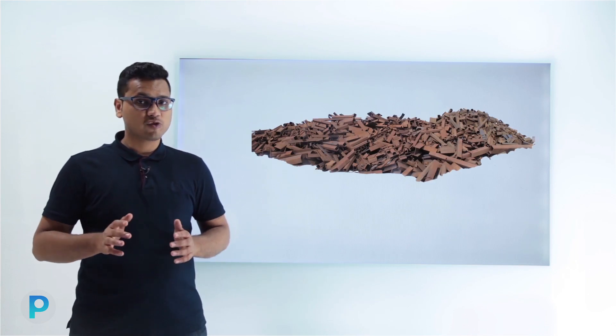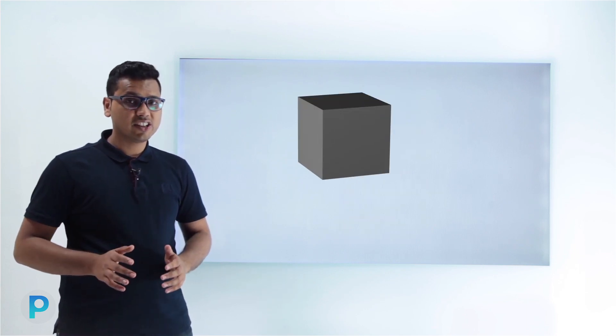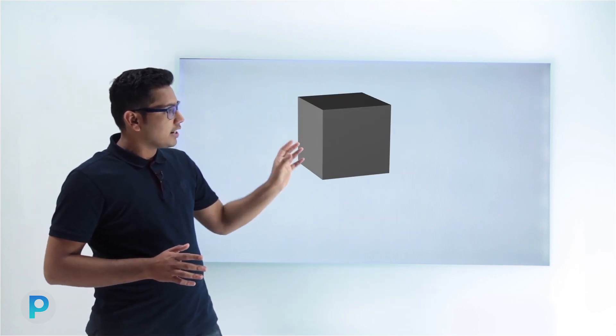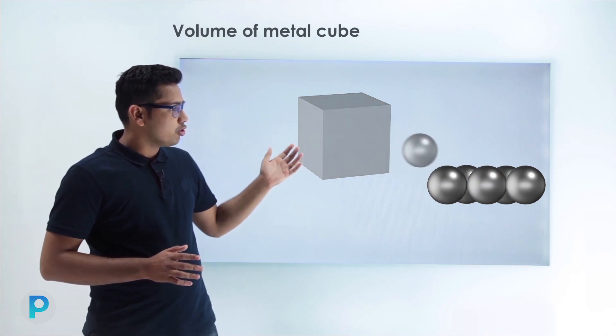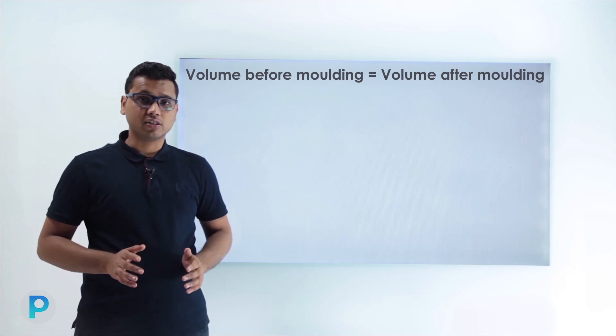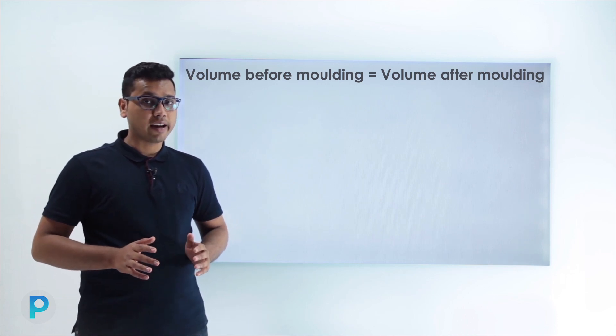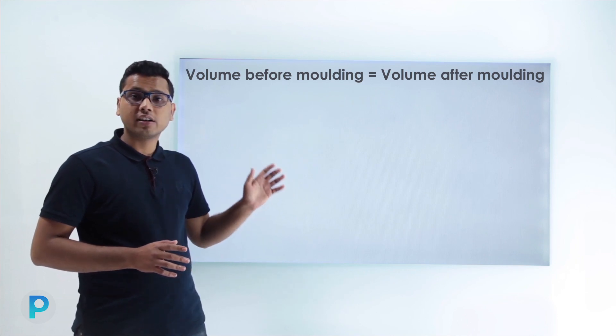This concept has many applications in industries. Metals from scrap are melted and then given a new shape to form a different solid, and in both cases the volume remains the same. For example, a cube melted to form one hundred metal balls — the volume of the metal cube and the volume of the hundred metal balls is the same. Just remember: the volume before and after molding remains the same.